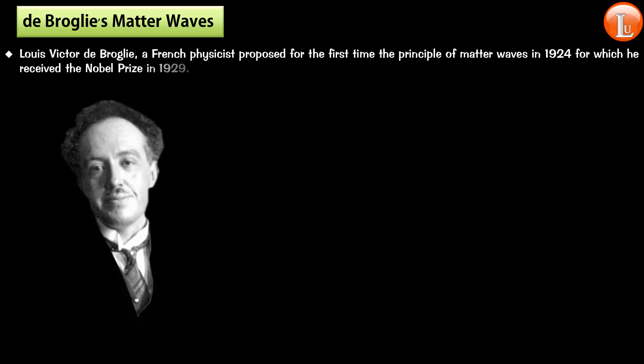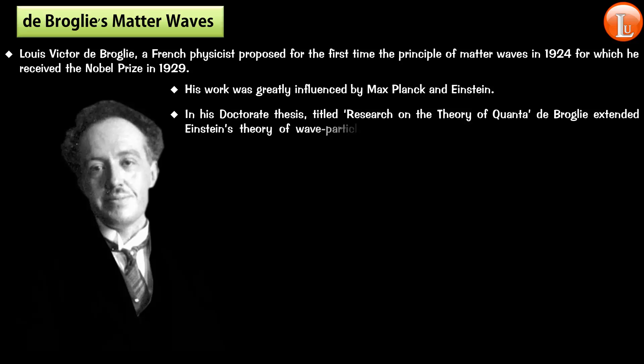Louis Victor de Broglie, a French physicist, proposed for the first time the principle of matter waves in 1924 for which he received the Nobel Prize in 1929. His work was greatly influenced by Max Planck and Einstein. In his doctoral thesis titled Research on the Theory of Quanta, de Broglie extended Einstein's theory of wave-particle duality of light to all particles.